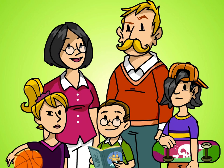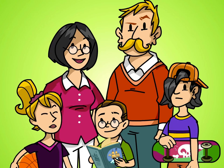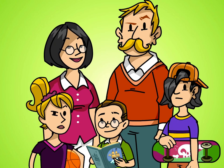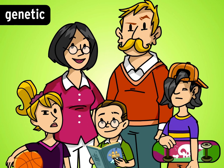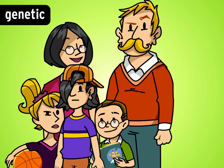That's why family members tend to look similar, but have lots of differences, too. Eye color, hair type, and facial features are genetic traits. You inherit them in the genes you get from your parents.